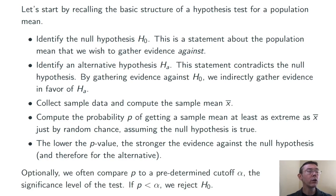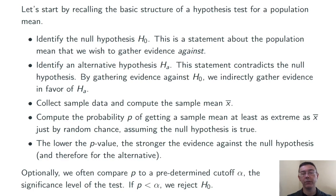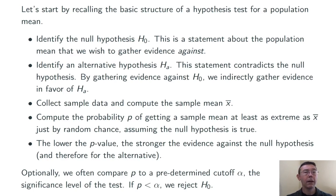Frequently, we conclude our hypothesis test by comparing that p-value to some predetermined cutoff alpha, the so-called significance level of the test. If P is less than that alpha, we reject the null hypothesis H0. By the way, if you're using a significance level alpha, that always needs to be chosen before data is collected.